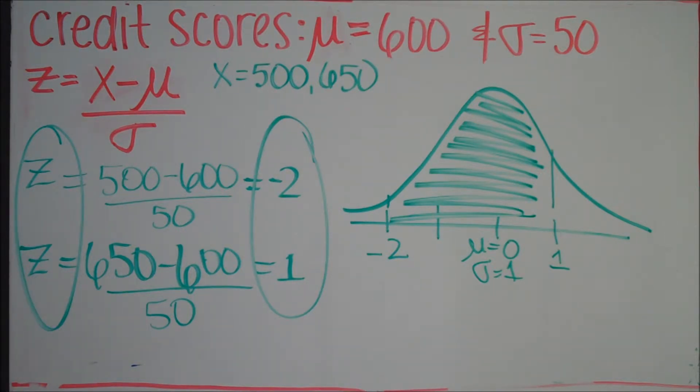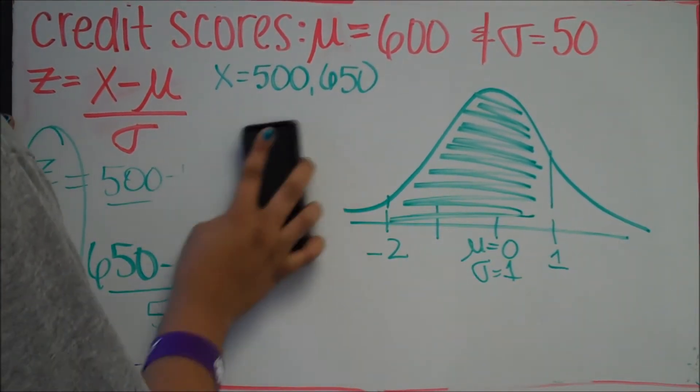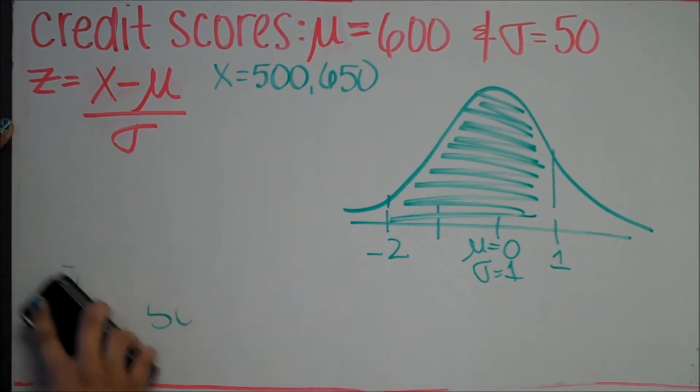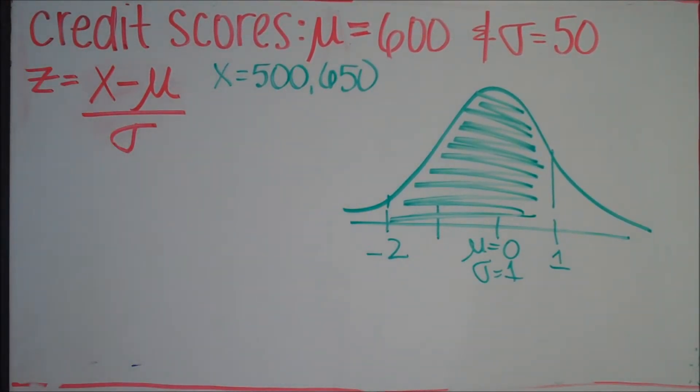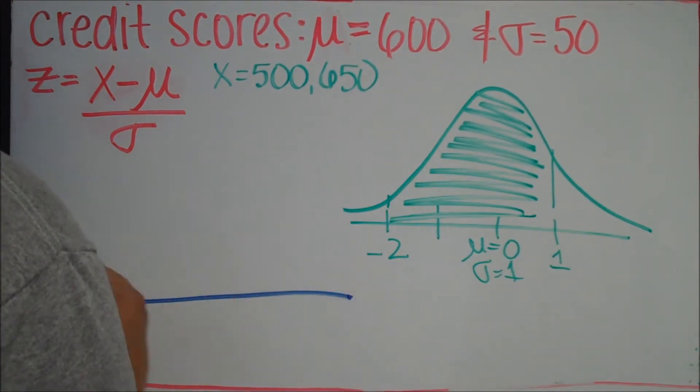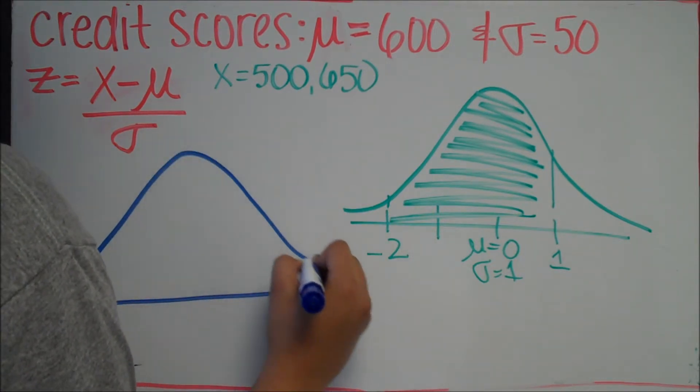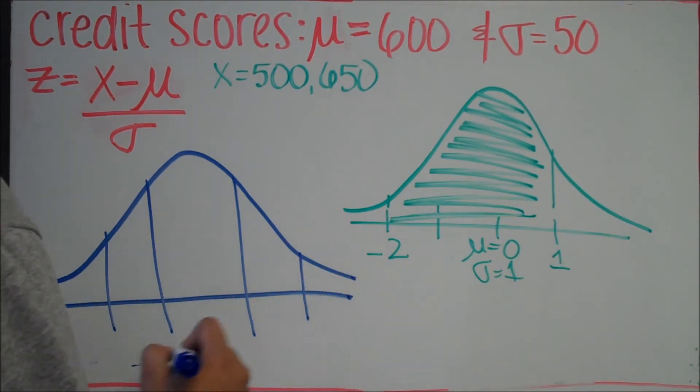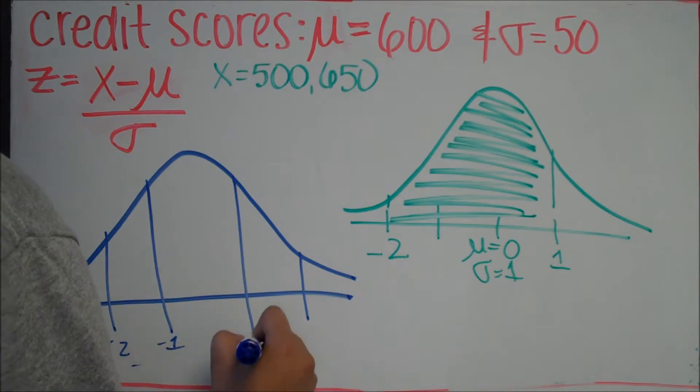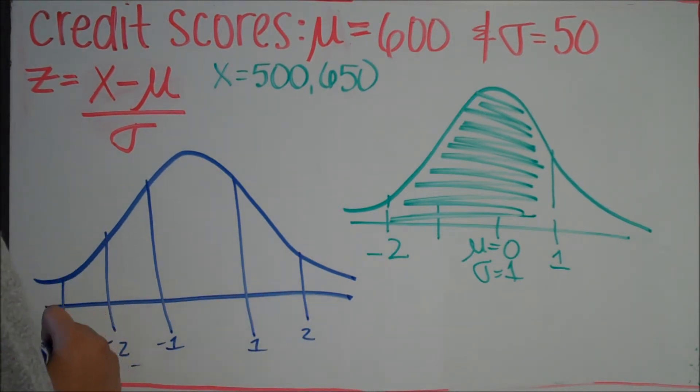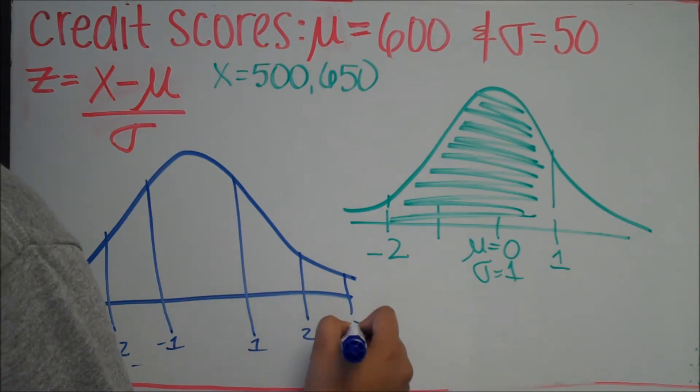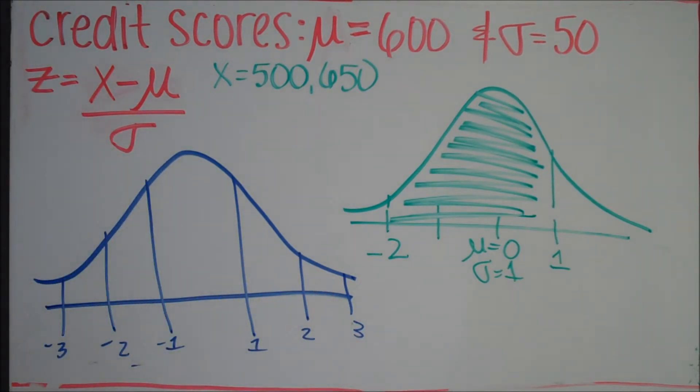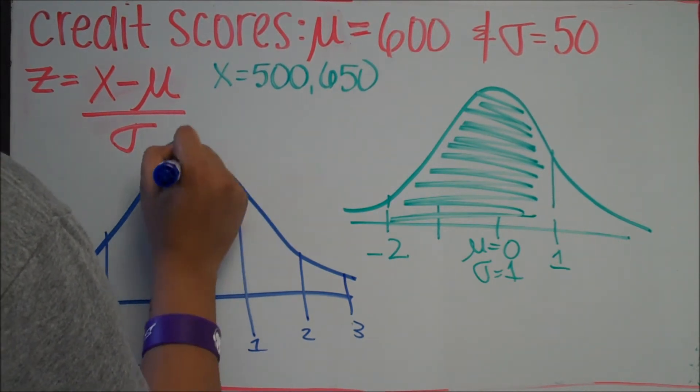Now you want to redraw the graph for the empirical formula. Remember that the middle is 68%. The next is 95% and the third is 99.7%. So we want to divide this up so we can actually find the probability.